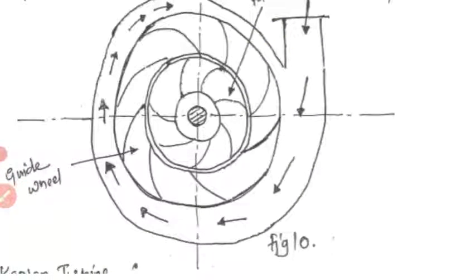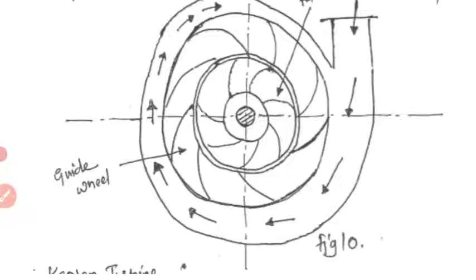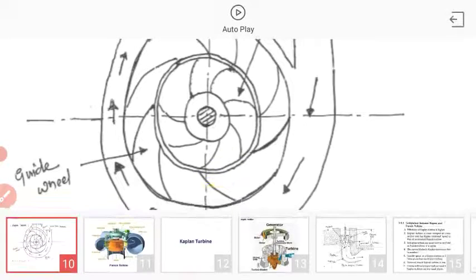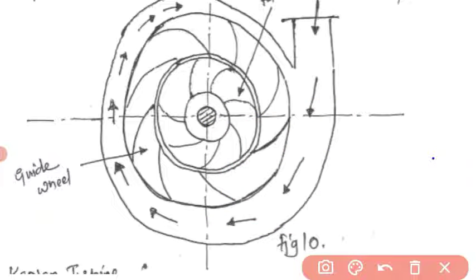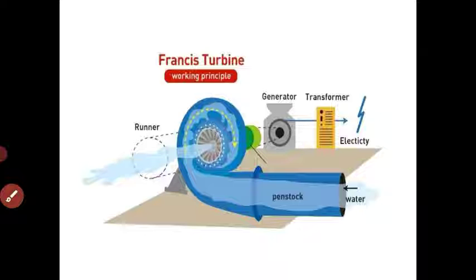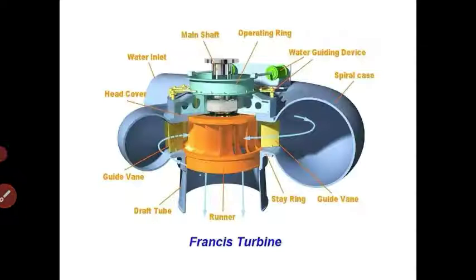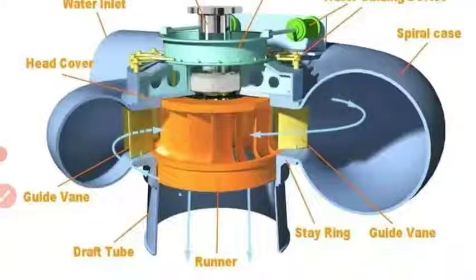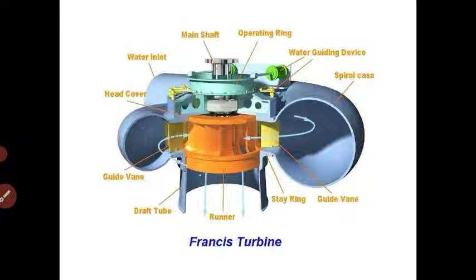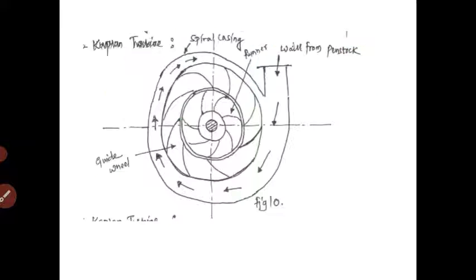In this diagram, you can see the guide wheel. Water enters so that rotation takes place in one proper direction. Here is another image of the reaction turbine showing the guide vane and the spiral case. The complete spiral case is visible in this figure.